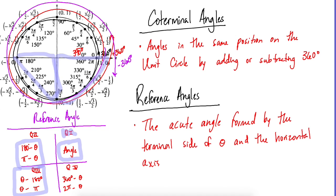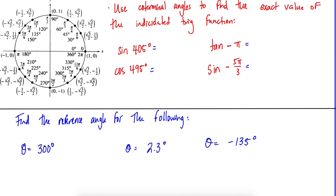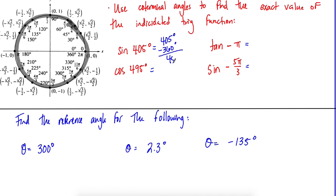For co-terminal angles: 405 is not on the unit circle, so subtract 360 — 405 minus 360 equals 45 degrees. 45 degrees is on the unit circle, and sine is the y-coordinate, so sine 405 equals √2/2. For cosine 495, subtract 360 to get 135 degrees. Cosine is the x-coordinate at 135, which is −√2/2.